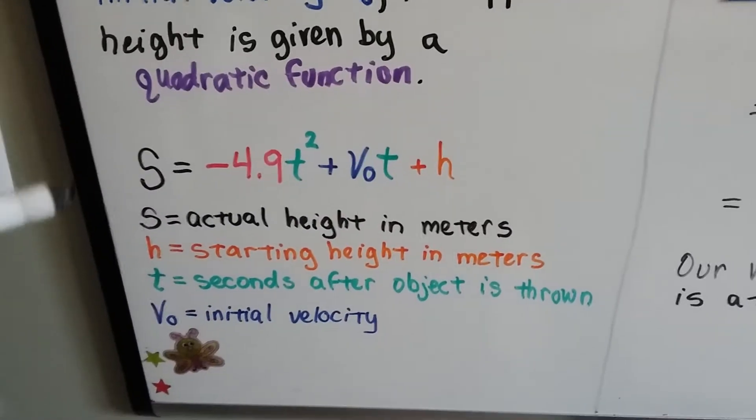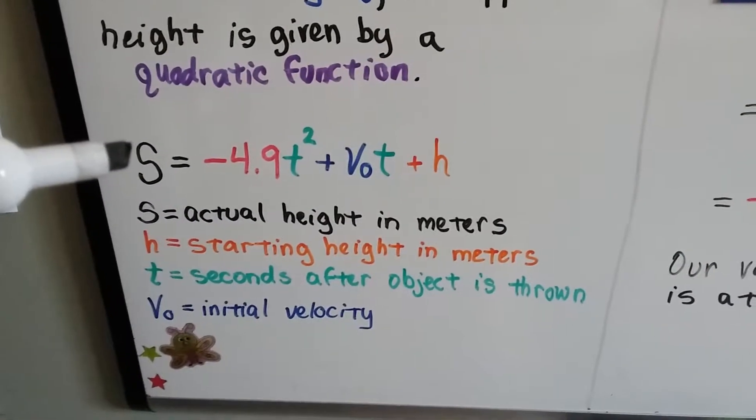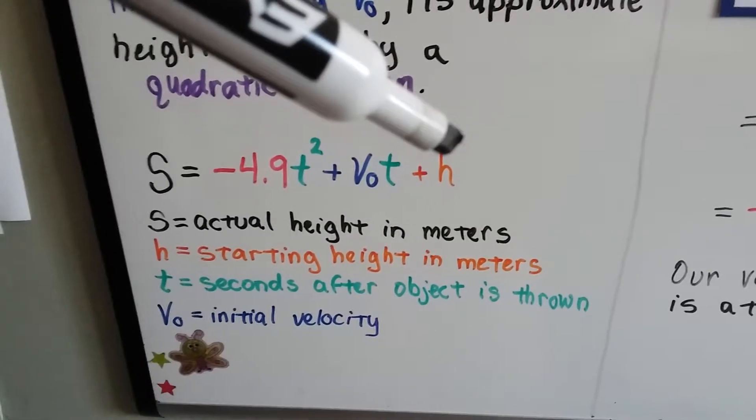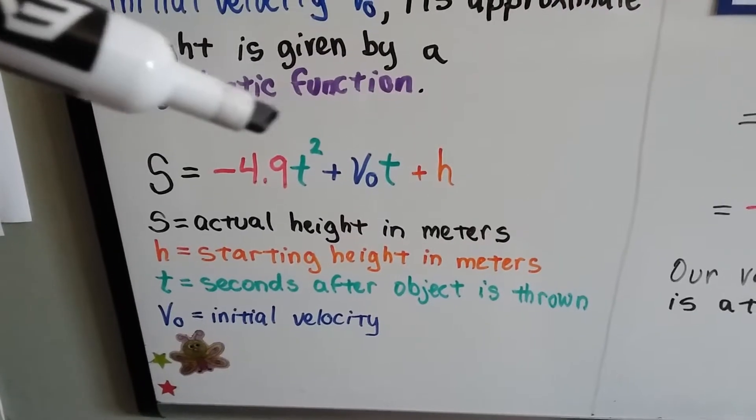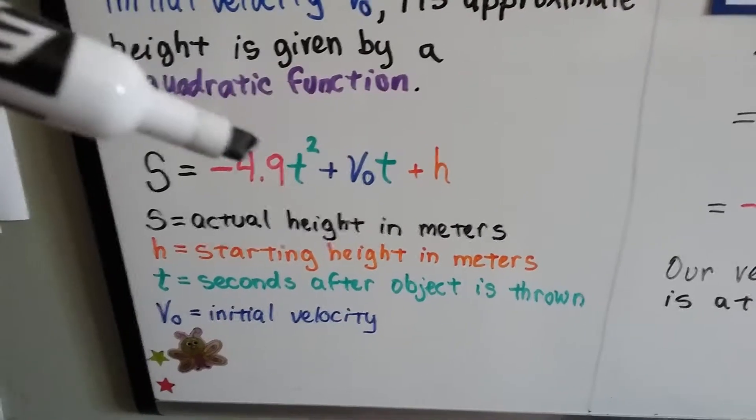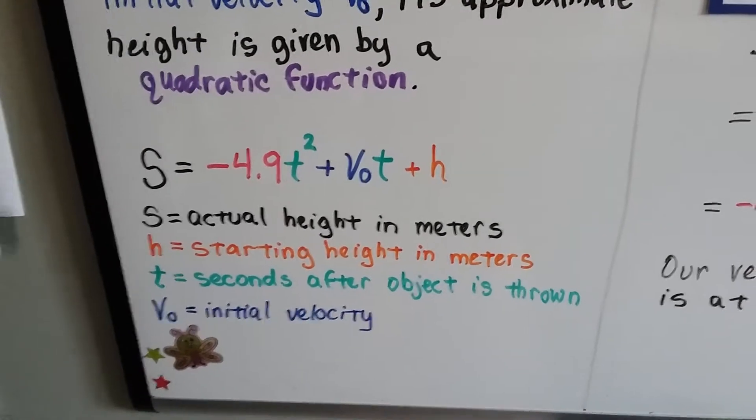The s is the actual height in meters. The h is the starting height in meters. The t is the seconds after the object is thrown or projected, and that v sub zero is the initial velocity.